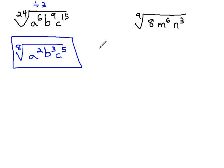In the second example, the 9th root of 8, m to the 6, n to the 3rd, we need to be careful to resist the temptation to divide 9, 6, and 3 by 3, because there is a number that we need to consider first. Unless we can divide the exponent on this number also by 3, we are not allowed to reduce.